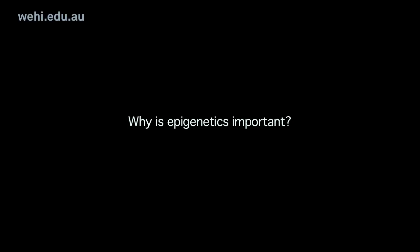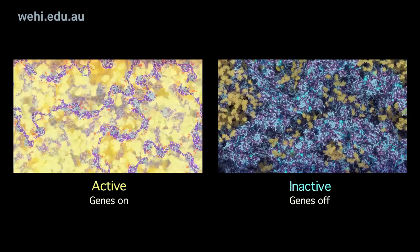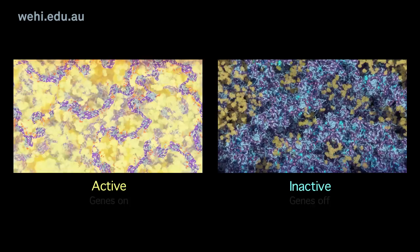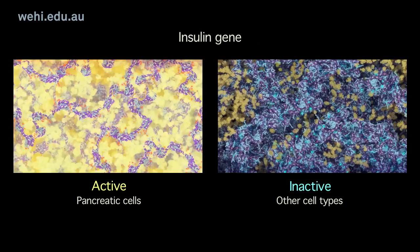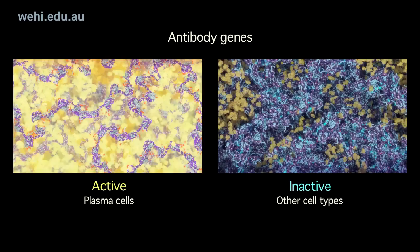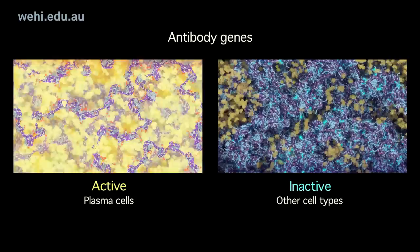Why is epigenetics important? The epigenetic regulation of DNA is not peculiar to the X chromosome — it is used throughout the body to turn different genes on or off in different cell types. For example, the insulin gene is switched on in pancreatic cells where insulin is made but is inactive elsewhere in the body. Antibody genes are active in the antibody-secreting plasma cells of the immune system but switched off elsewhere in the body.